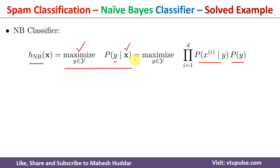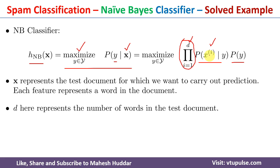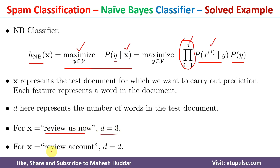Since the new example x may contain multiple words, for each word we calculate its conditional probability — probability of word 1 given y, probability of word 2 given y, probability of word 3 given y, and so on — and multiply all those probabilities together. Here d is the number of words in the new example. For the first new example there are 3 words so d equals 3, and for the second example there are 2 words so d equals 2.